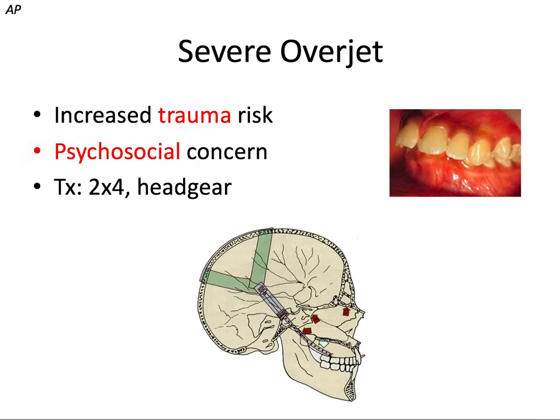Severe overjet is another anterior-posterior problem that can manifest early on in life. There's increased risk of trauma to the upper incisors if they stick out, and the child or parent may be concerned with the appearance. We can use a two-by-four appliance to tip those front teeth back, and/or class two headgear, which restrains maxillary growth at the sutures. We'll talk more about these class two headgear types in the next video on appliances.